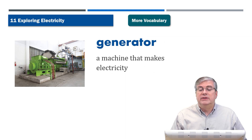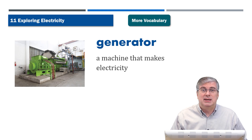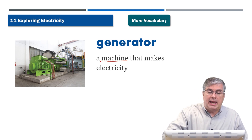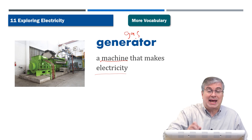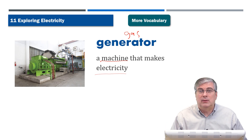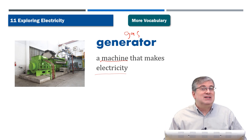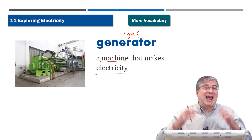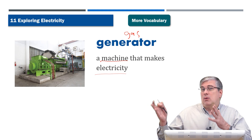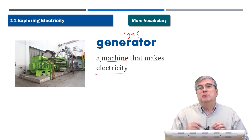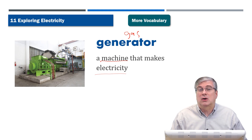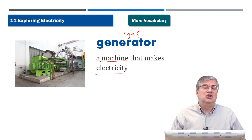A 'generator' is a machine that makes electricity. Sometimes people use a gas generator — they put in gas like the kind you put in your car to make electricity. This is useful in case there's an accident or disaster and the power plant doesn't work, or electricity is cut to a certain area. Some people have generators at home — they put gas in it and it produces electricity for the house.